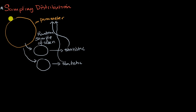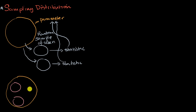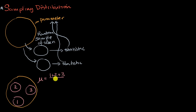Let's make this even a little bit more concrete with a very simple example. Let's say our population has three balls in it, numbered one, two, and three. It's very easy to calculate the parameter we care about — the population mean. That is going to be one plus two plus three, all over three, which is six divided by three, which is two. So that is our population parameter.